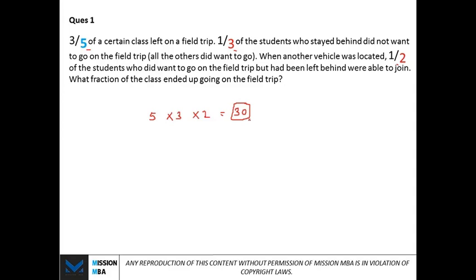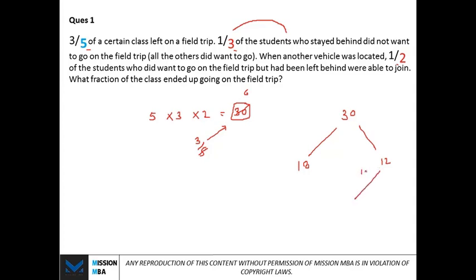With thirty students, the calculation is very simple. Three-fifths of thirty is eighteen — so eighteen students left on the field trip, and twelve were left behind. Now, one-third of those left behind did not want to go: one-third of twelve is four. So four did not want to join.